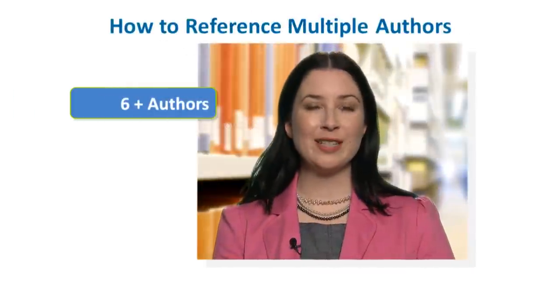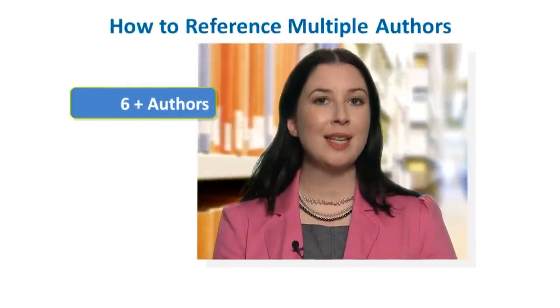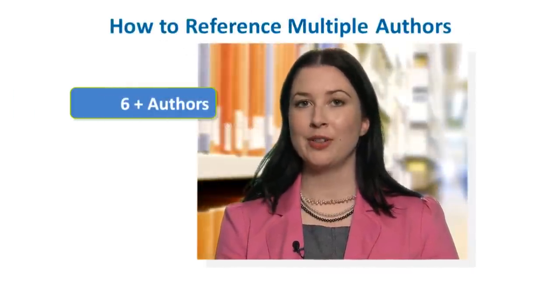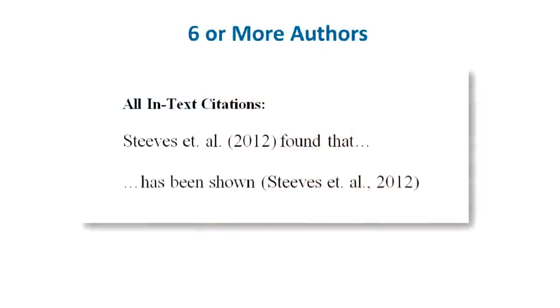The big difference is when you have six or more authors. When you have six or more authors, you can use et al. every time you cite the source in your text.